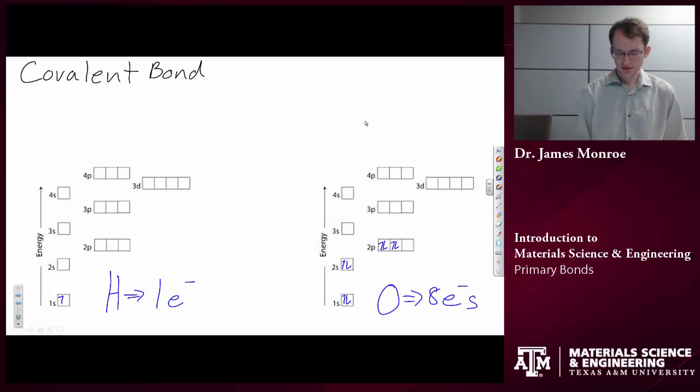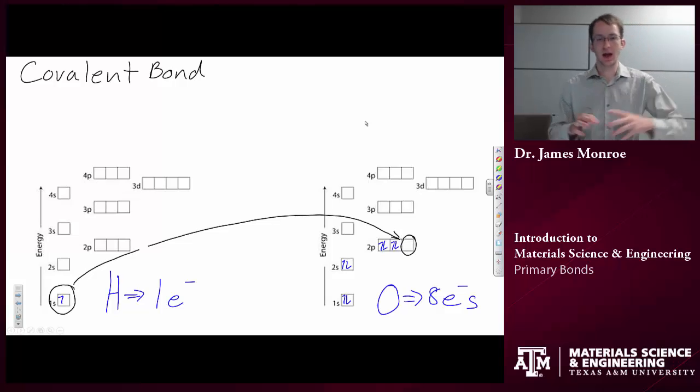And what happens is, this hydrogen will want to donate one of its electrons to the 2P subshell of oxygen. But oxygen has two vacancies, not just one. And so, two hydrogens get together, and they both partially donate their electrons to oxygen.